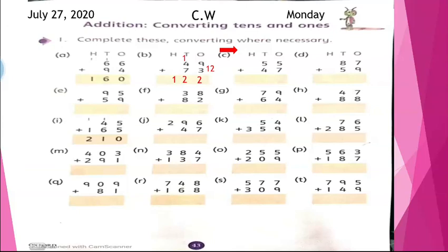55 plus 47. Again, bigger number is 7. We will keep 7 in mind and open next number's fingers, means 5 fingers. We will open 5 fingers. Now, 7 in mind. Start counting after 7: 8, 9, 10, 11, 12. Again the answer is 12. So we will write 2 on ones place and 1 will go in tens place.